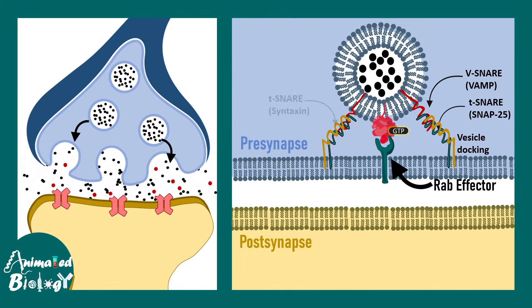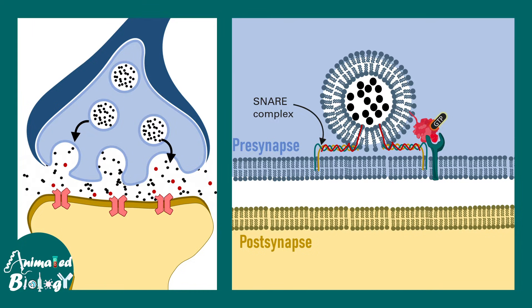The T-SNAREs in the context of the synapse are SNAP-25 and syntaxin. They interact with VAMP to form the SNARE complex. Initially a loose SNARE complex is formed, and eventually a tight SNARE complex is formed. Calcium ions also help in this overall SNARE formation. The tight SNARE complex brings the membrane of the vesicle and the presynaptic membrane so close together that they can fuse.